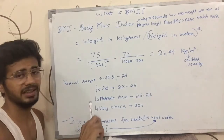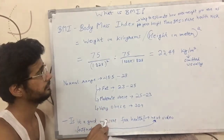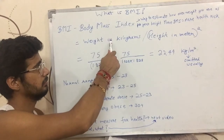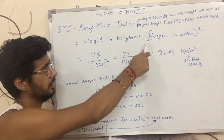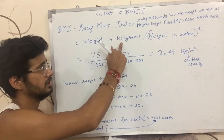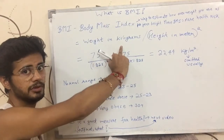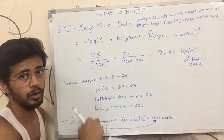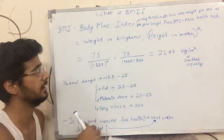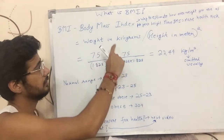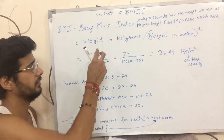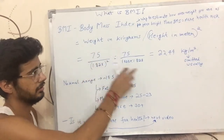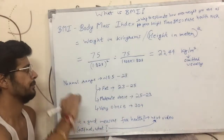Every person has a unique BMI of their own. To calculate your BMI, put in your weight in Kilograms — not in Pounds — and your height in Meters, not in Inches or Feet. Put your weight in Kilograms and height in Meters squared, do the calculation, and you will get your BMI.